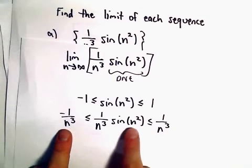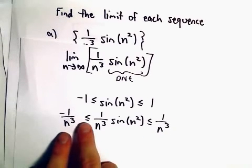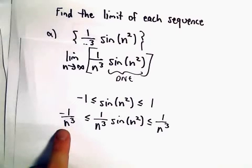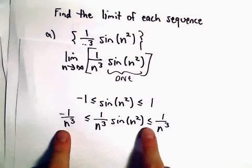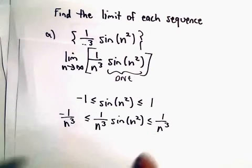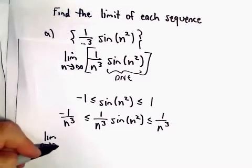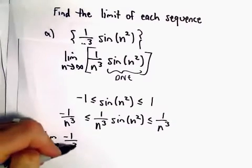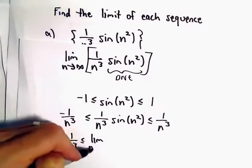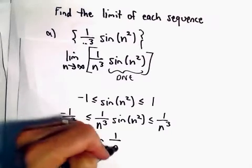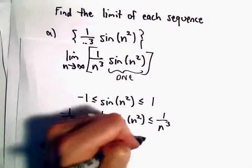1 over n cubed sine of n squared is always going to be greater than or equal to negative 1 over n cubed, but it's always smaller than positive 1 over n cubed. If we take the limit as n goes to infinity of all of these, now we're using the squeeze theorem.